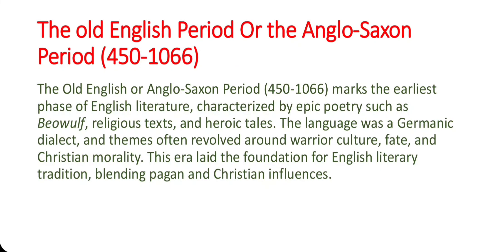Our journey begins with the Old English period, also known as the Anglo-Saxon period, which spanned from 450 to 1066. This era is marked by the emergence of heroic poetry such as the epic Beowulf. The language was a precursor to modern English, and the literature of this time was characterized by a strong emphasis on themes of heroism, loyalty, and the struggle between good and evil.